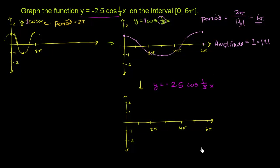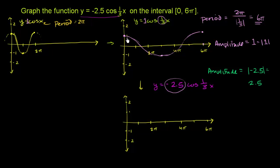The amplitude for y equals negative 2.5 cosine of 1 third x is the absolute value of negative 2.5, which equals 2.5. If we were multiplying by just positive 2.5, you would stretch the graph - at each point it would go up by a factor of 2.5. But because it's negative 2.5, you stretch it out and then flip it over the x-axis.